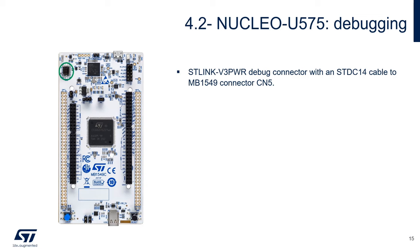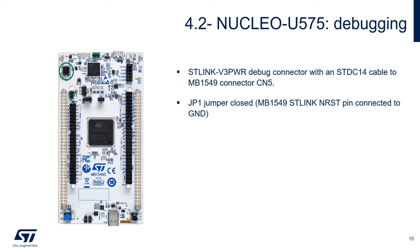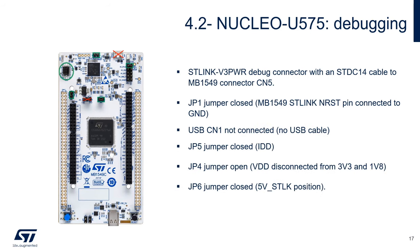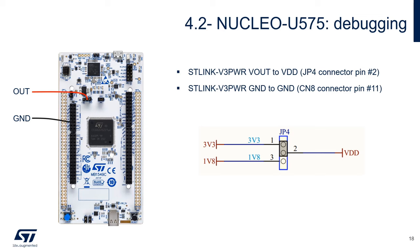The ST-Link V3Power should be connected to the target application on the CN5 debug connector with the cable from the ST-Link V3Power kit. The JP1 jumper needs to be closed to reset the internal Nucleo ST-Link, since we use an external debug probe. USB CN1 must be disconnected — we will power the Nucleo with the ST-Link V3Power and not a USB cable. The JP4 jumper needs to be open, disconnecting VDD from the output of the 1.8V and 3.3V voltage regulators. Finally, the JP5 jumper needs to be closed to ensure the link between VDD and VDD MCU. Now we can connect the ST-Link V3Power to the target as shown.